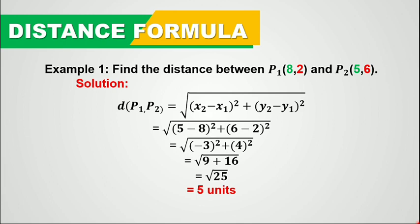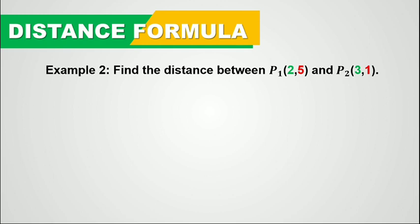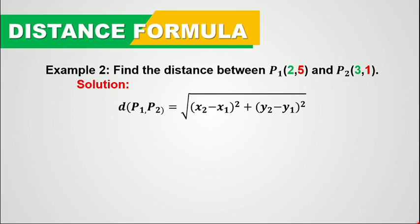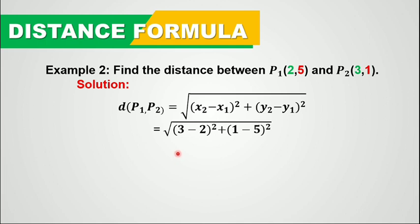Now let's take the second example for you to understand this concept better. We have to find the distance between point 1 and point 2 given these coordinates. Our x sub 1 is 2, x sub 2 is 3, y sub 1 is 5, and y sub 2 is 1. Let's substitute them respectively.